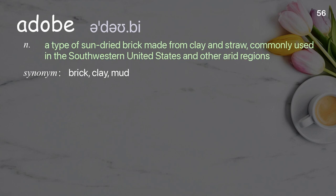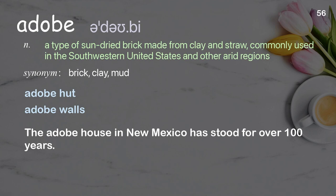Adobe: a type of sun-dried brick made from clay and straw, commonly used in the southwestern United States and other arid regions. Examples: adobe hut, adobe walls. The adobe house in New Mexico has stood for over 100 years.